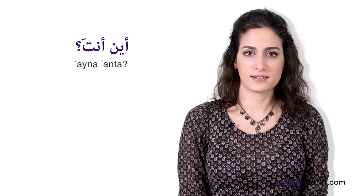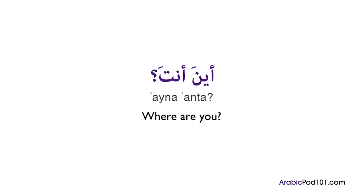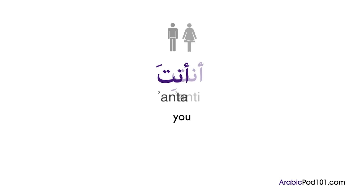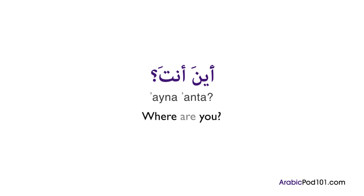Imagine you want to ask where your friend is now. You will ask him: أين أنت؟ This is the exact translation of 'where are you' in Arabic. Let's break down this question. أين is the basic translation of 'where' in Arabic. أنت is 'you' in the masculine; it becomes أنتِ in the feminine. The question أين أنت؟ doesn't need a verb, and the answer is the same structure: أنا في المدرسة — I am at school.